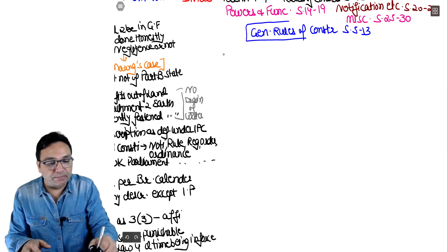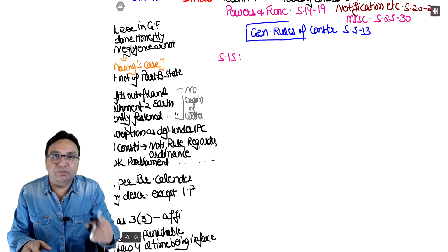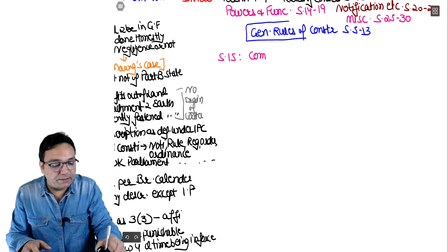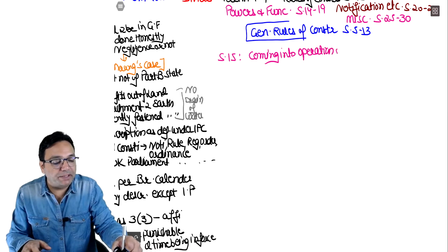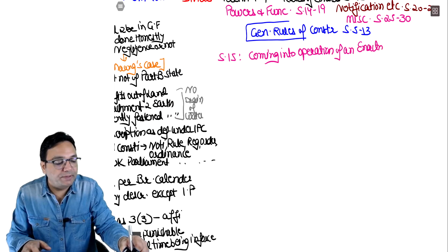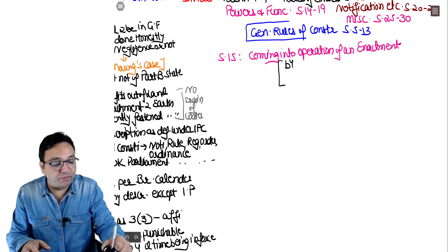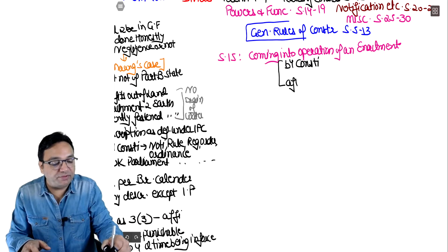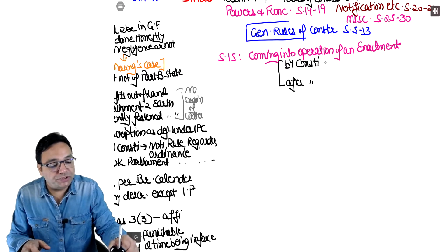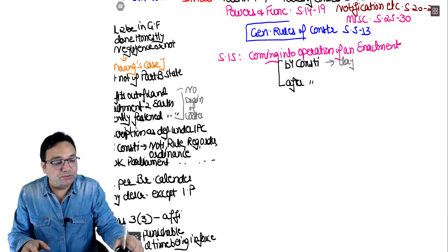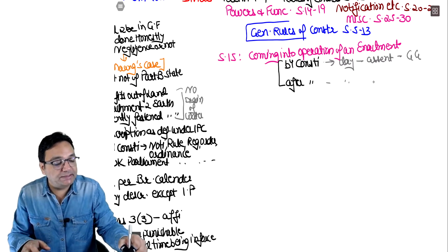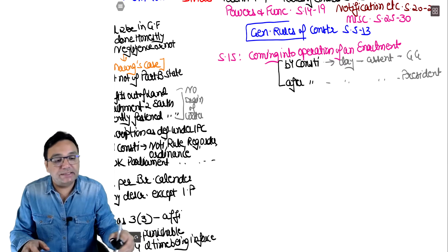Section 5 says the same thing as section 3(13) about commencement - coming into operation of an enactment, meaning from which day a law will start. Two situations: if an act was made before the Constitution, it will start from the day the Governor General gave assent. After the Constitution, from the day the President gave assent. But one important thing - until published in the Official Gazette, no act starts.